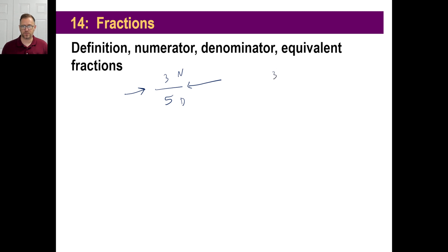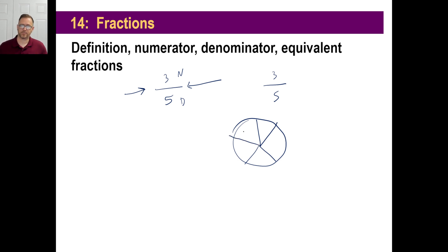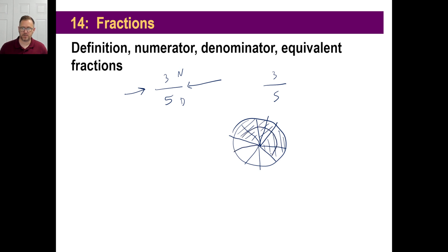Equivalent fractions — if you were to take three-fifths of a pizza, you could say I can eat three-fifths of this pizza. Now, if you were to cut all those pieces in half, you would be eating six pieces of pizza out of ten. So three out of five is the same thing as six out of ten.